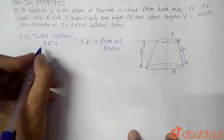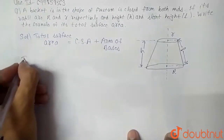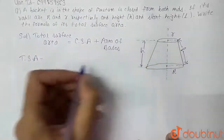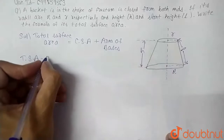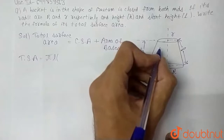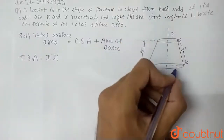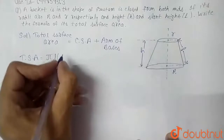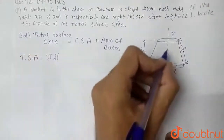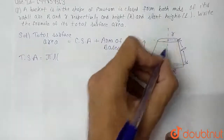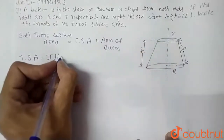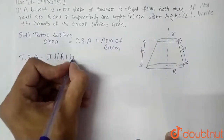So we can write TSA. We know that the curved surface area of a frustum equals π × L × (capital R + small r). So the formula for curved surface area is π into L, multiplied by the sum of the radii of both circles, which is capital R plus small r.